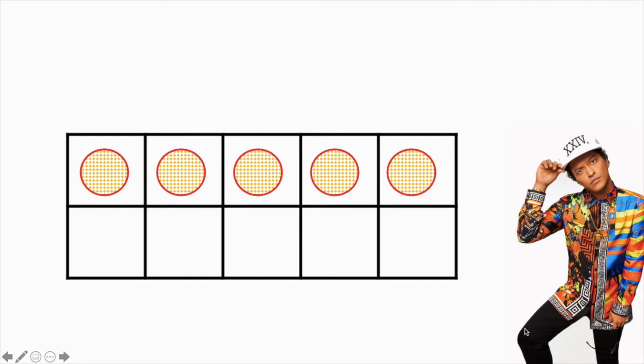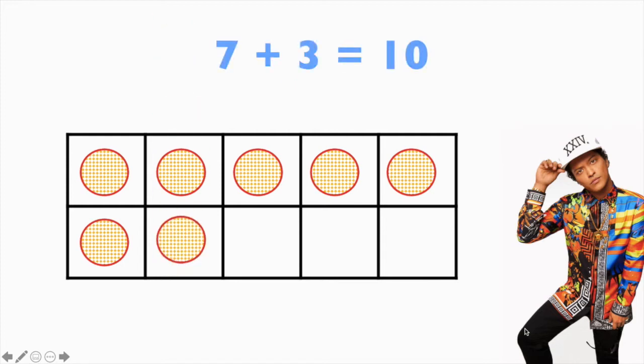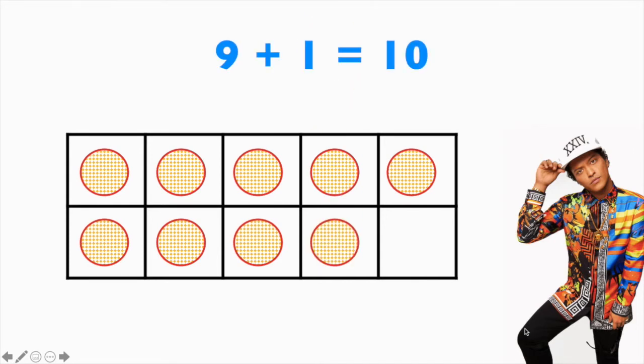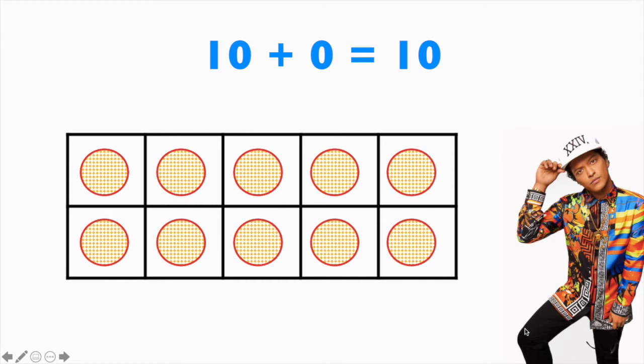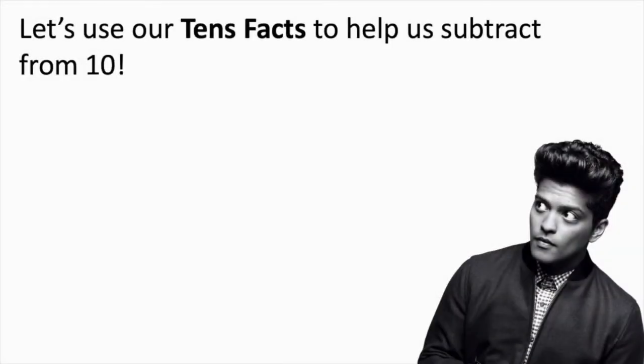Let's keep going. Can you say the rest with me? Here we go. 6 plus 4 equals 10. 7 plus 3 equals 10. 8 plus 2 equals 10. 9 plus 1 equals 10. And 10 plus 0 equals 10. So those are all the different combinations of 10 that we know in a snap.